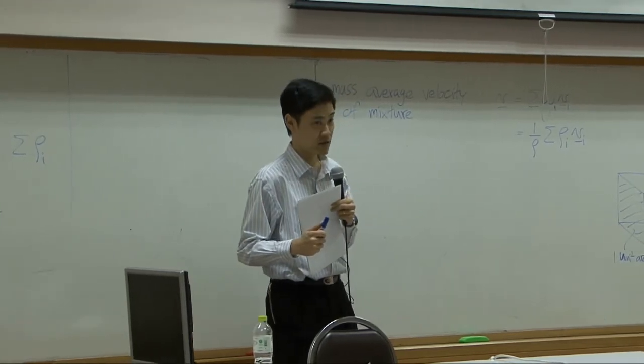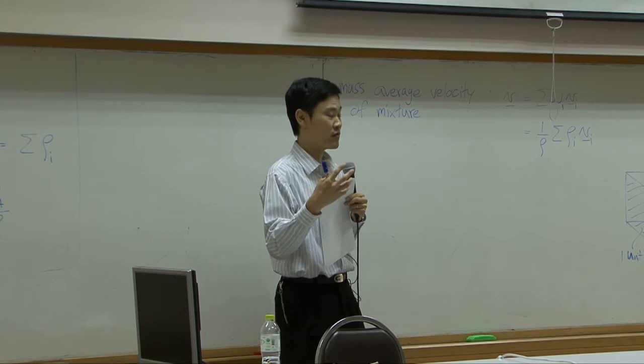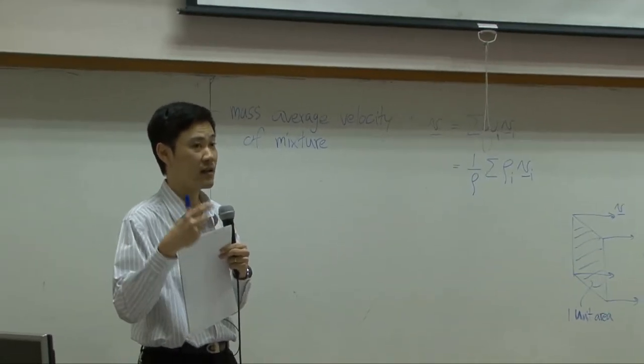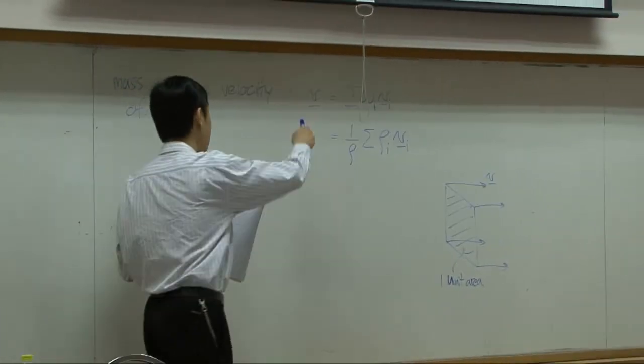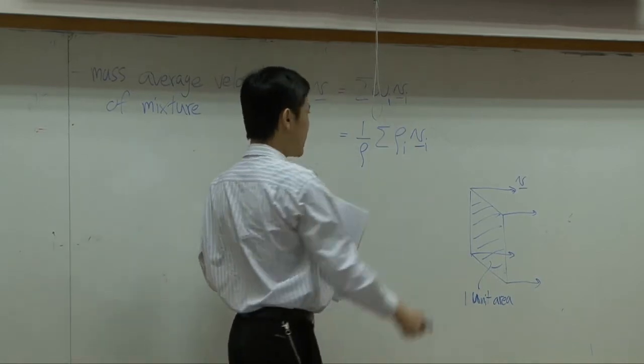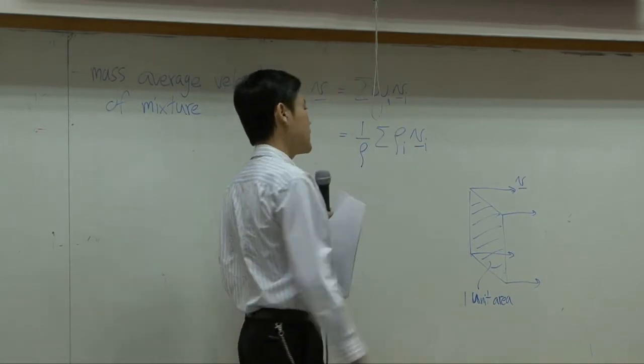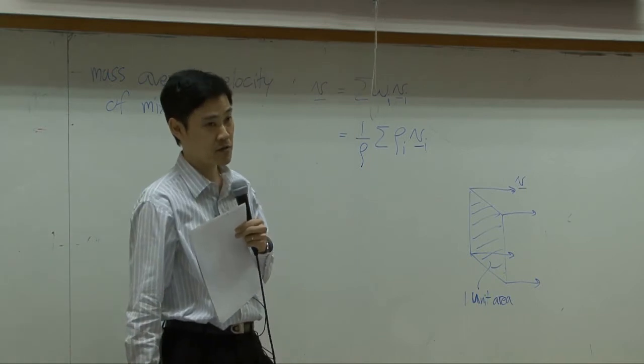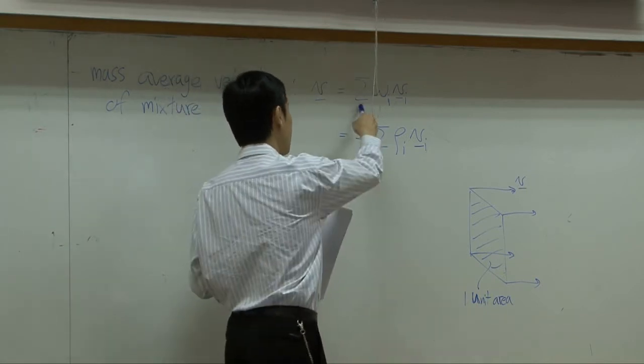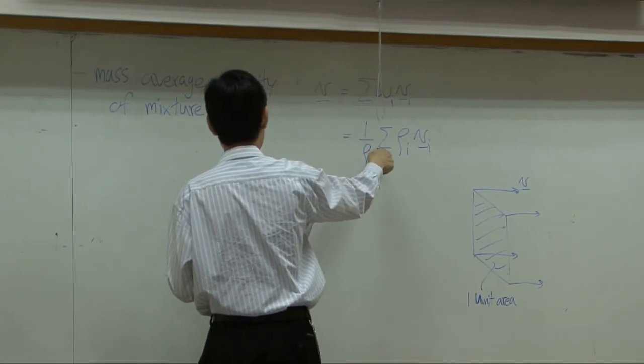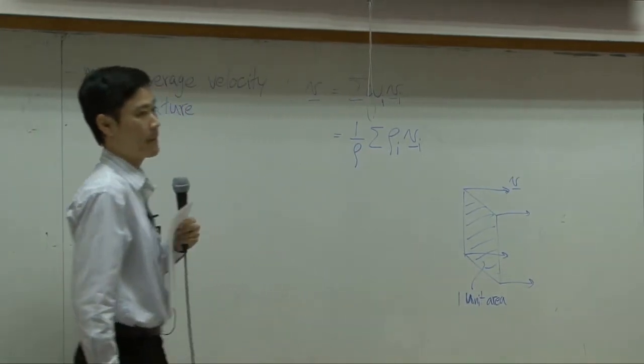Then at the end of Wednesday, we talked about average velocity of the mixture. Remember, we have small, I mean, fast-moving molecules and slow-moving molecules. On average, the whole mixture would have velocity somewhere in between. The V here would be velocity of the mixture on average. It is a function of velocity of each component as well as the concentration of the species. This is one way to define how we can find the average velocity of the mixture. From here, if you take definition of mass fraction there, plug it in here, and take the total concentration out, you can get this equation.